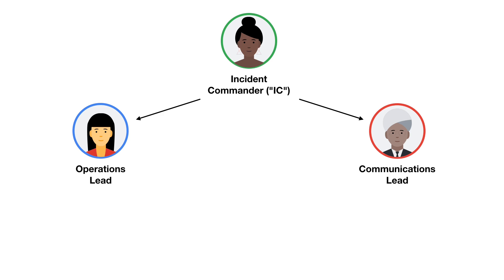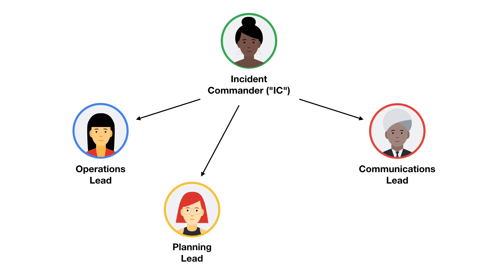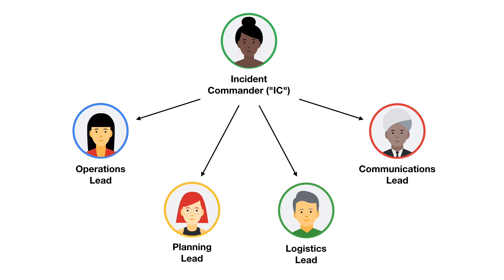And what if an incident grows so large that the decision-making responsibility and the planning and the logistical work becomes too much work for one person to handle? In that scenario, you might want to have a dedicated Planning Lead — having someone be in charge of writing the plan, maintaining the running notes document, and starting to draft the post-mortem. Another common role is a Logistics Lead, who handles things like securing rooms, making sure that people have food and water and other supplies. Or you could get more creative, depending on the needs of your organization and your business.